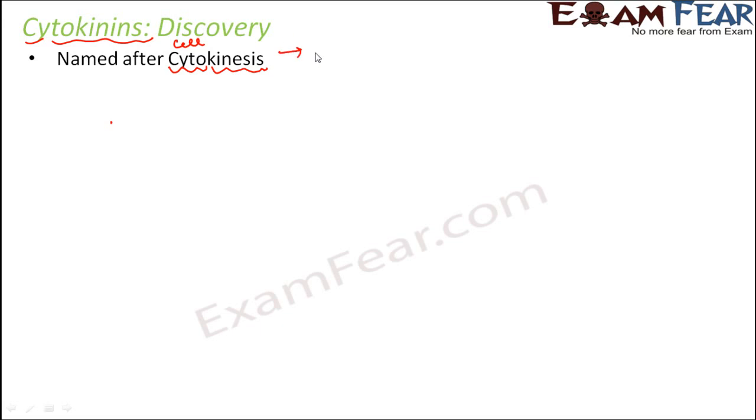Let us see how cytokinins were discovered and why they are called cytokinins. The term cytokinins is derived from the word cytokinesis, which means cell division. Cyto means cell, and kinesis comes from the word kinetic, meaning movement. So altogether, cytokinesis means cell division, and cytokinins promote cell division.